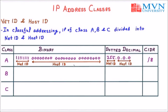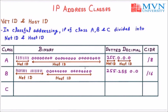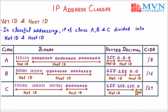For class B, the CIDR is /16, meaning the first 16 bits are 1 and the rest are 0. In dotted decimal this is 255.255.0.0. The first two octets are the NetID and the remaining two are the HostID. For class C, the CIDR is /24, meaning the first 24 bits are 1 and the rest are 0. In dotted decimal this is 255.255.255.0. The first three octets are the NetID and the last octet is the HostID. This is called the default mask for classful addressing.